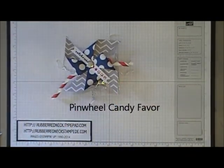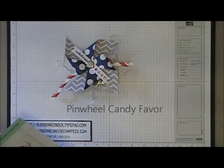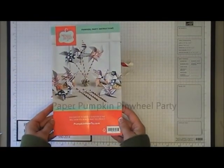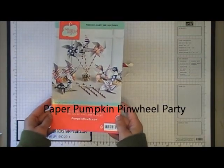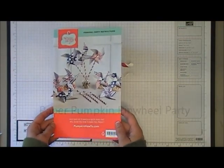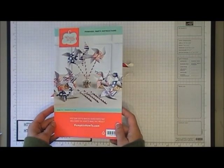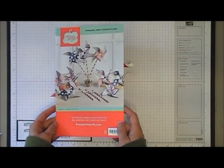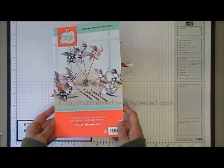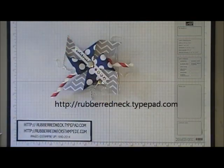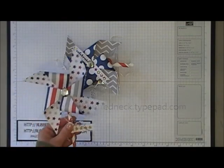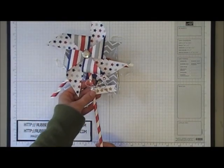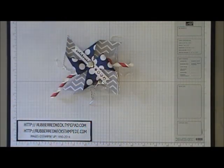Now the supplies that are used to create this came in this month's paper pumpkin kit called Pinwheel Party. Paper pumpkin is a fun kit that is 10 minutes of creativity that is sent to your door every month. If you would like to sign up for the paper pumpkin kit please visit my blog rubberredneck.typepad.com. Now this month's kit made these fun cute little pinwheels or it also made toppers for the cellophane bags that came in the kits.